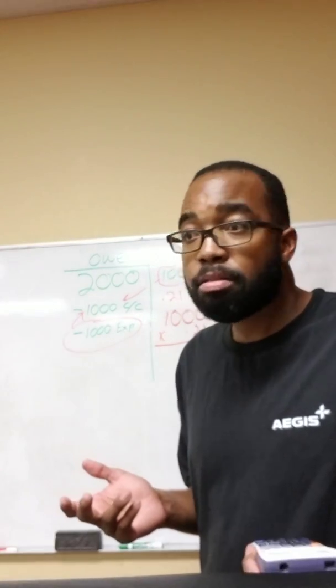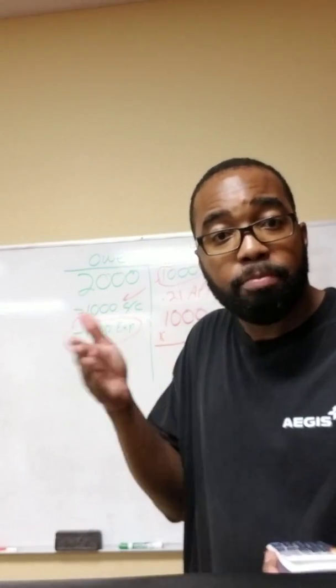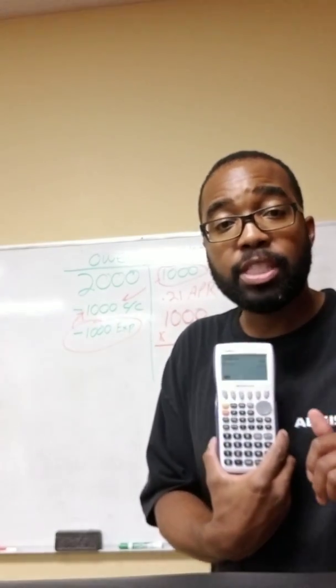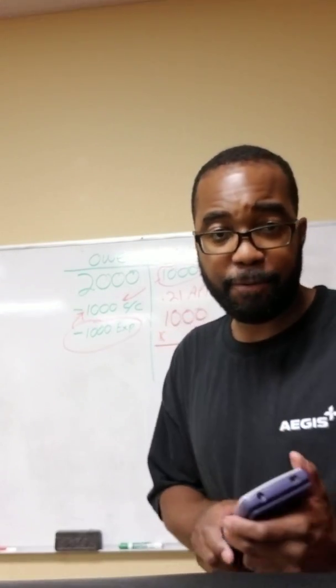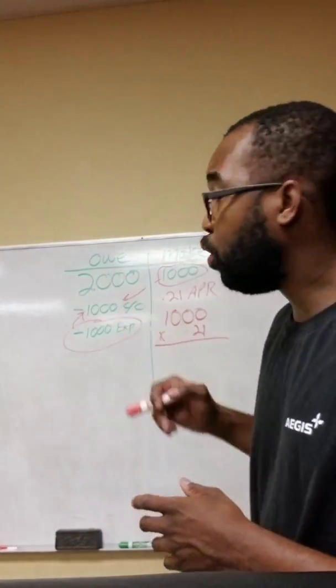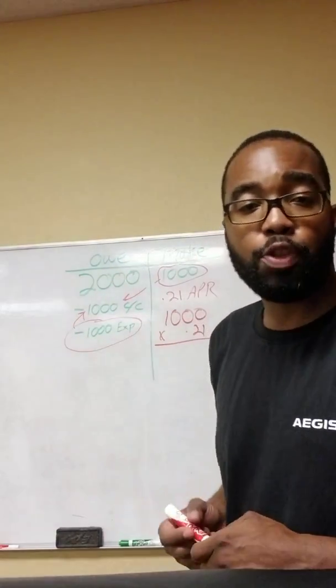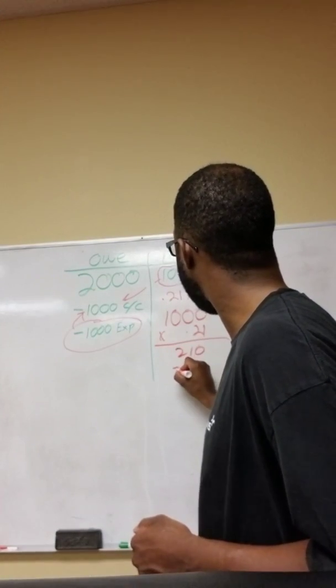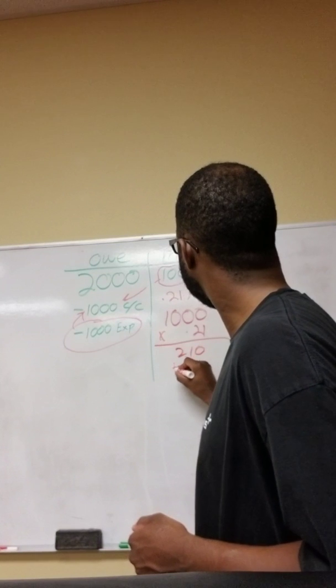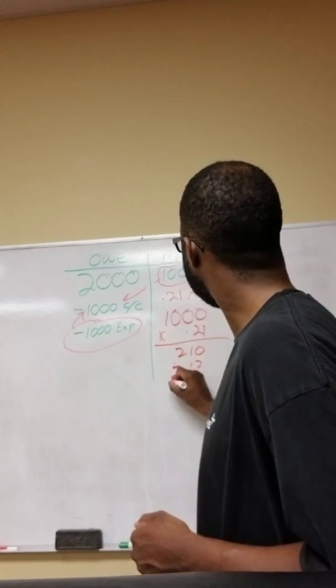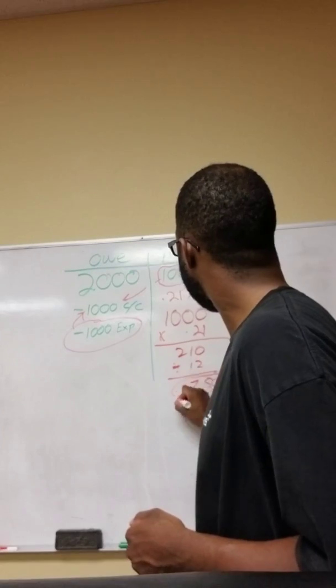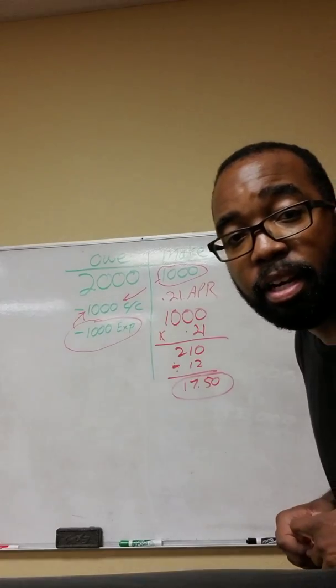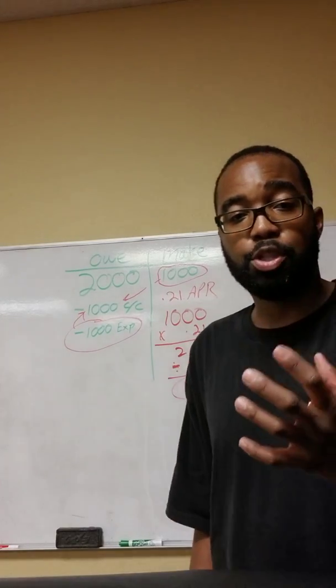So divide that by 12 and it equals $17.50 a month that you'll accrue with that $1,000 on the credit card. And then divided by old school here, 12, that equals $17.50 a month. Look, that's $17.50 a month and that's what you're accruing.